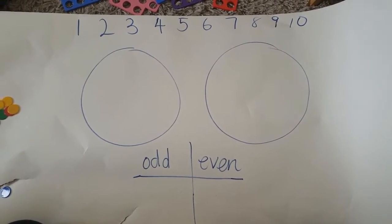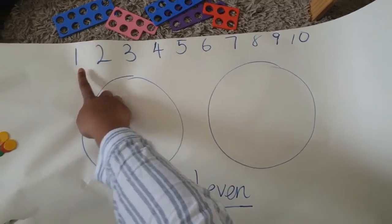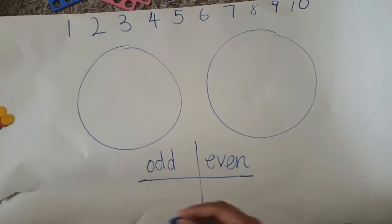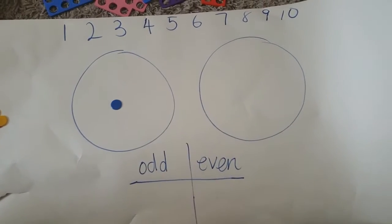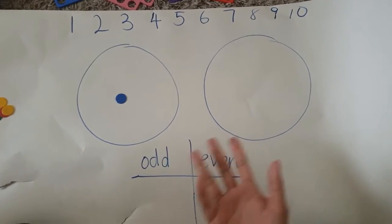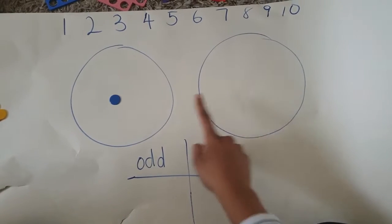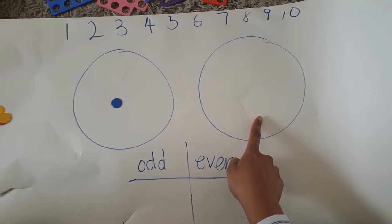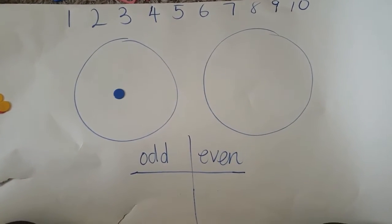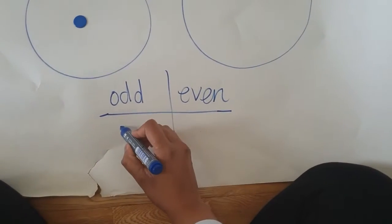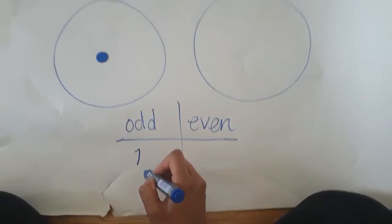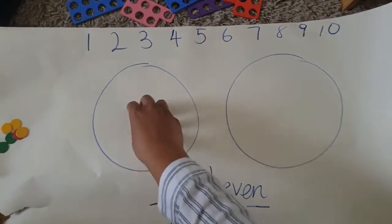Let's take the number one, for example. Right, one. I have one counter here. I'm going to put it into one of my groups. I don't have anything to put in here. Are the groups equal? No. So therefore, that means that number one is an odd number. So I'm going to record it here.